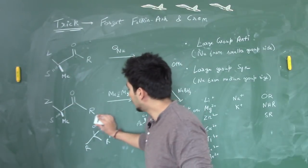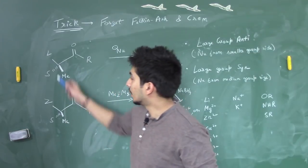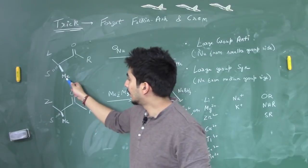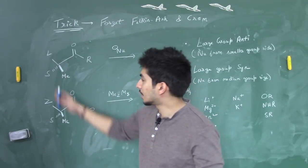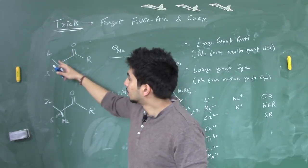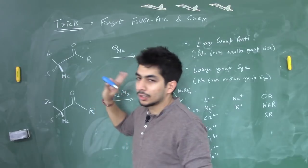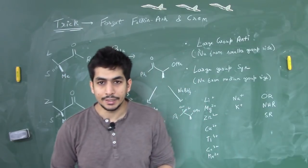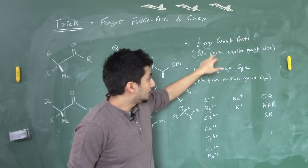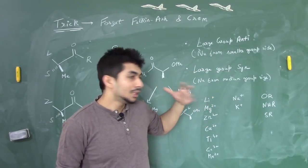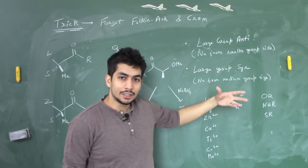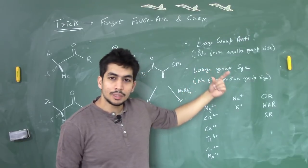Now for the trick: you have a large group (L), a small group (S), and a methyl group as the medium group (M) — three kinds of groups attached to your chiral center adjacent to the pro-chiral carbonyl carbon. The simple trick is: when the large group is anti to your ketone, the nucleophile will attack from the smaller group side. When the large group is syn to the ketone, the nucleophile will attack from the medium group side.